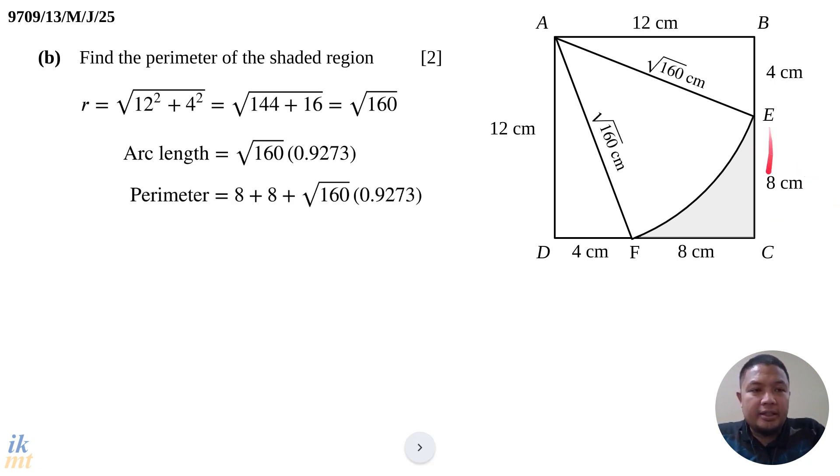Perimeter is 8 plus 8 plus the arc length. At this point, press your calculator and get the decimal answer. Because they're not asking for specific rounding, you can immediately round to 3 significant figures. In 3 significant figures, you should get 27.7 centimeters. Very simple.